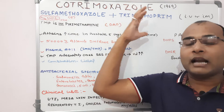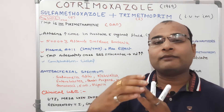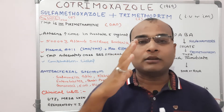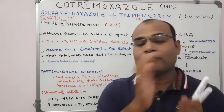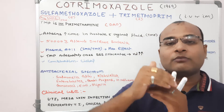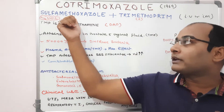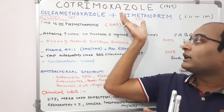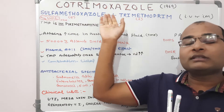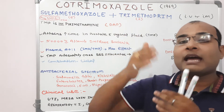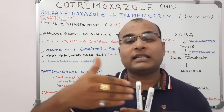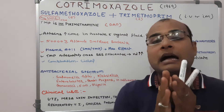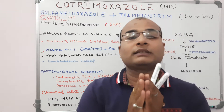In Cotrimoxazole we combine Sulfamethoxazole and Trimethoprim in a defined ratio, and that defined ratio is 5:1 — we take 5 parts of Sulfamethoxazole and 1 part of Trimethoprim. The reason for combining these two specifically is that Sulfamethoxazole and Trimethoprim have approximately the same half-life, which is approximately 10 hours, so they are kept together in the Cotrimoxazole combination.